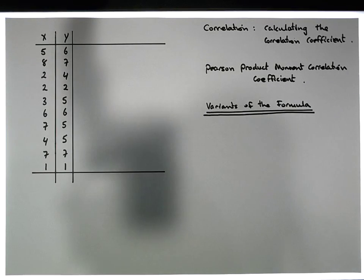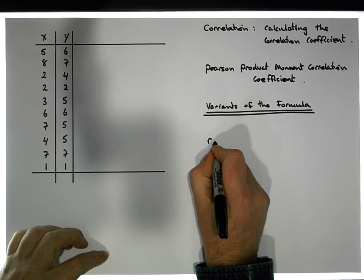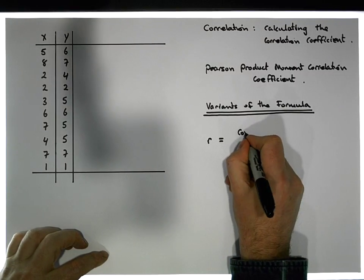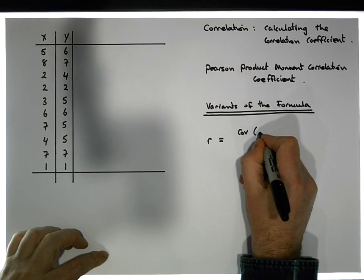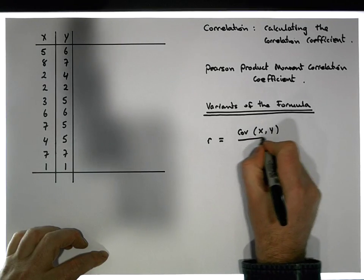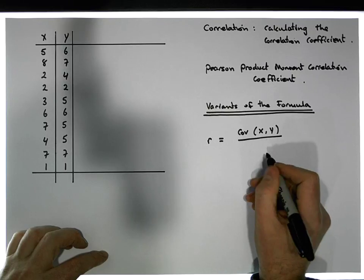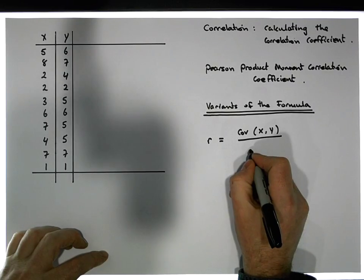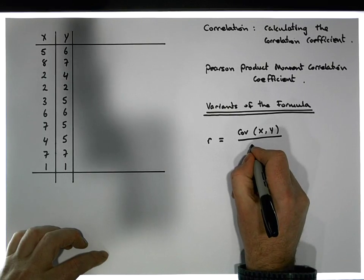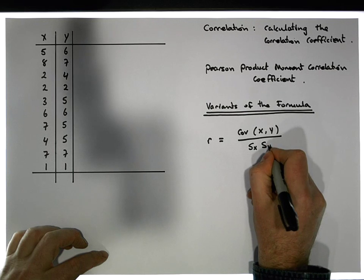By definition, the correlation coefficient r is defined to be equal to the covariance between the two variables, divided by the covariance standardized based on the standard deviation of x and the standard deviation of y — that is, the product of the standard deviation of x times the standard deviation of y.